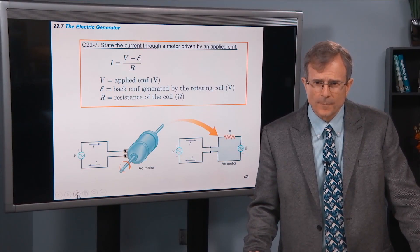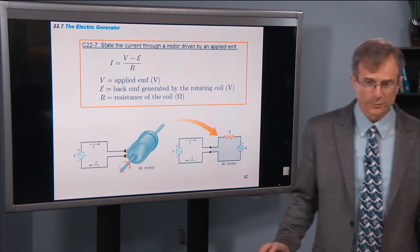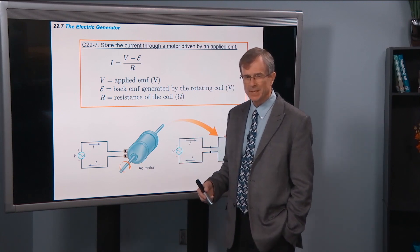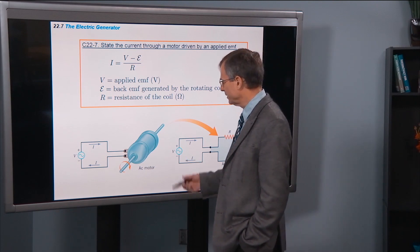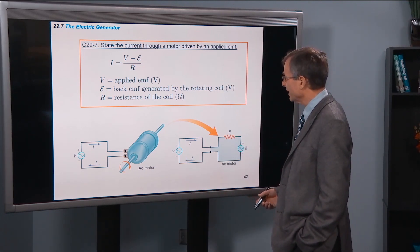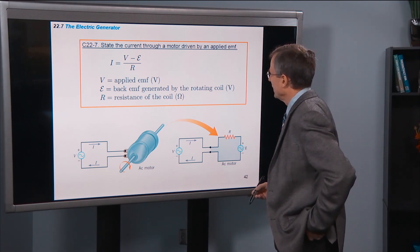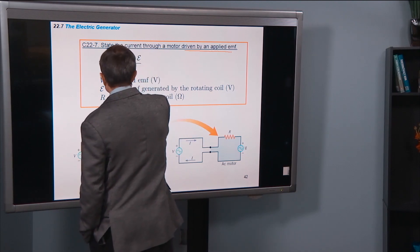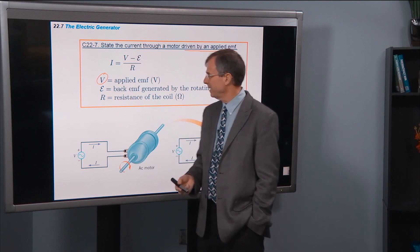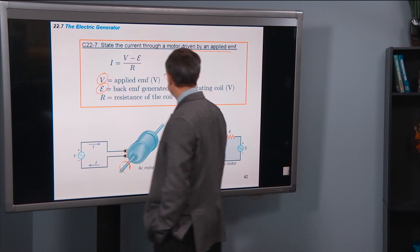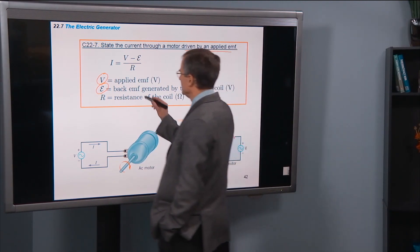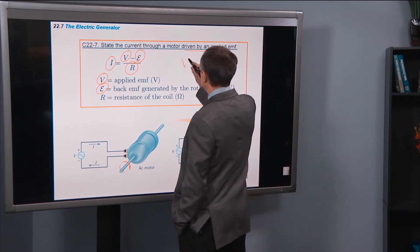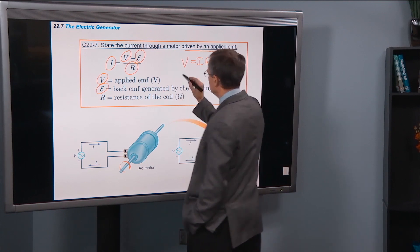So let's put some mathematical flesh on the bones here. We talked about the fact that in a motor we've got two EMFs going on opposing each other: the EMF that generates the original effect and the back EMF generated by Lenz's law. The current through a motor driven by an applied EMF V is given by the difference between the applied EMF V and the back EMF generated by the rotating coil. So we take the applied minus the back EMF, divide by R, and that'll give us the resistance.